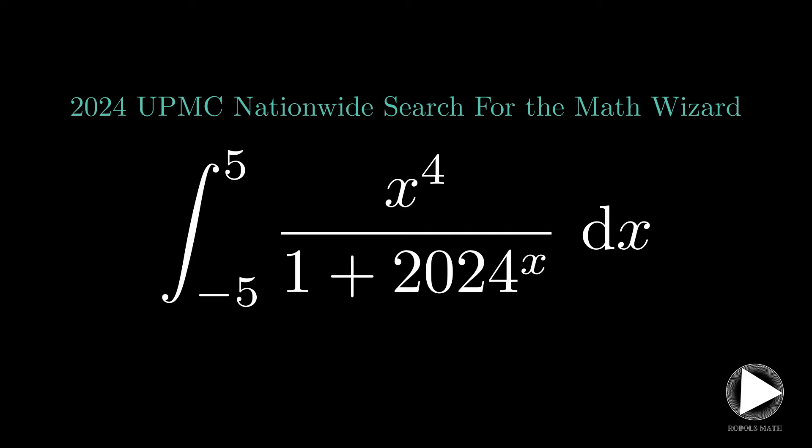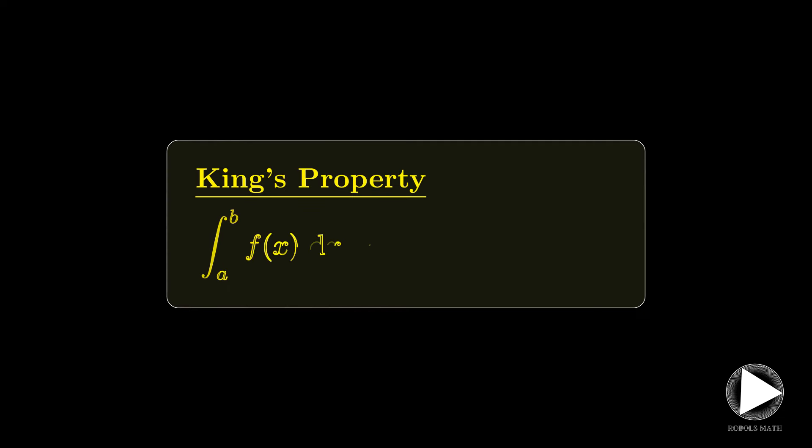The actual trick here is to use what we call the king's property for definite integrals. That is, the integral of f of x from x equals a to b is equal to the integral of f of a plus b minus x from x equals a to b.